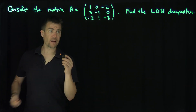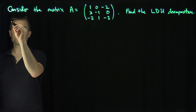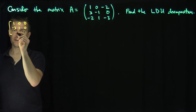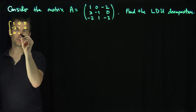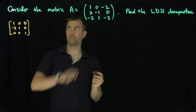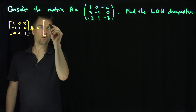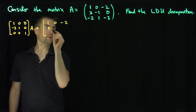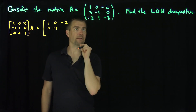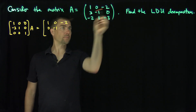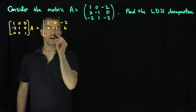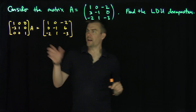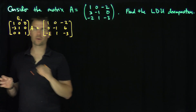The first thing we're going to do is apply this elementary matrix: 1, 0, 0, negative 3, 1, 0, 0, 0, 1. That's the operation negative 3 times row 1 plus row 2. Applying that to A gives us: 1, 0, negative 2, then 0, negative 1, then negative 6, positive 6, then negative 2, 1, negative 3. I'll call this matrix E1.